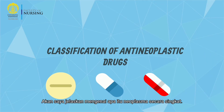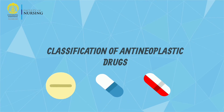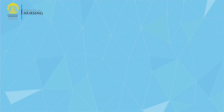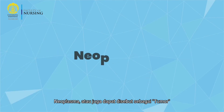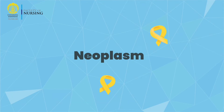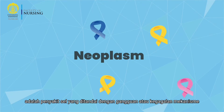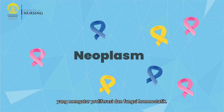let me briefly explain about neoplasm itself. Neoplasm, also known as tumor, is a cell disease characterized by disruption or failure of mechanisms that regulate proliferation and homeostatic function.